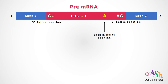This is a representation of a pre-mRNA containing the GU-AG type of intron. This intron is flanked by exon 1 and exon 2 at the 5' and 3' end respectively. At the 5' end of the intron, you have the GU sequence, and at the 3' end of the intron, we have the AG sequence. That is why this intron is called the GU-AG type of intron.